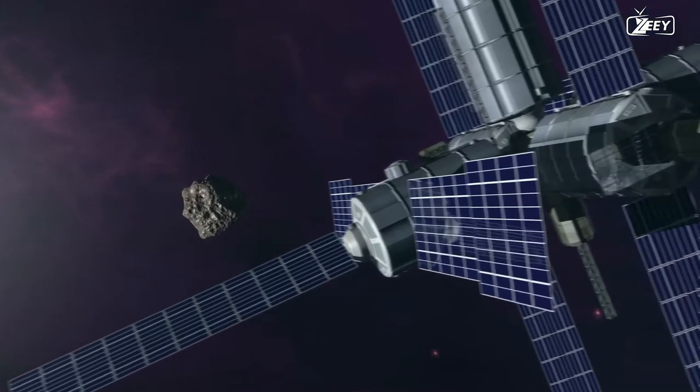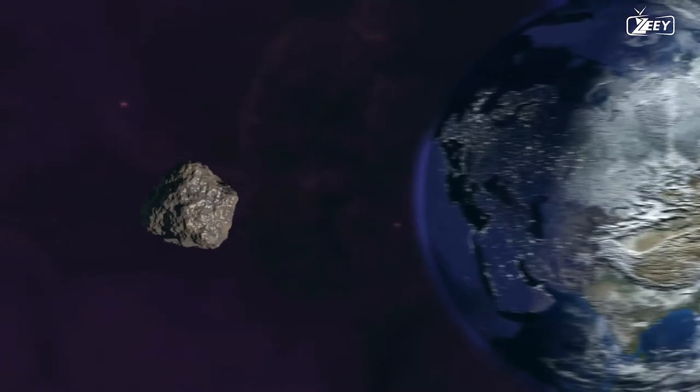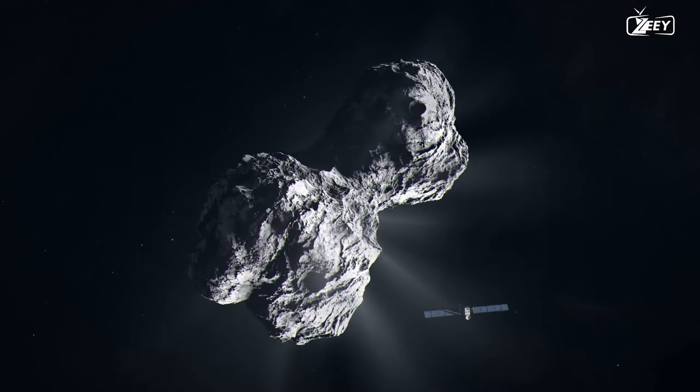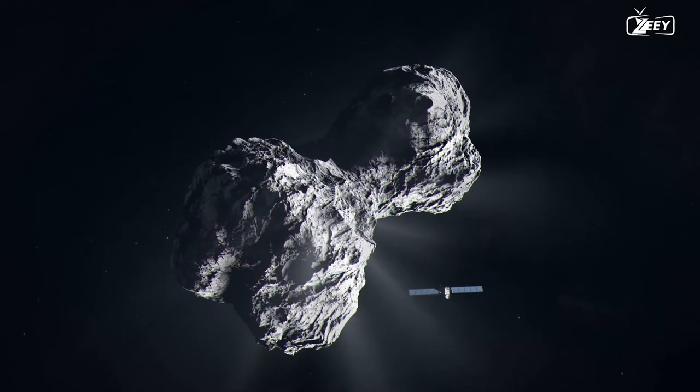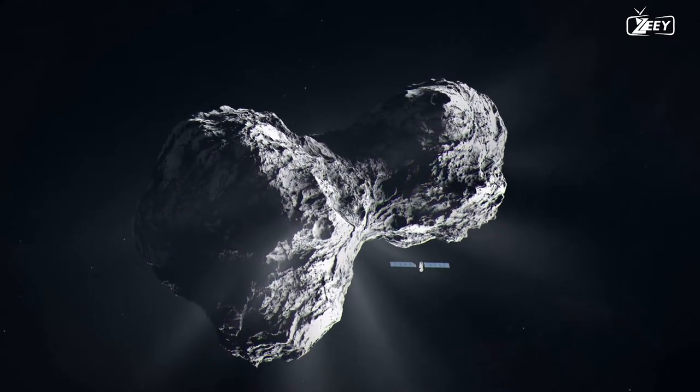Collaboration between James Webb and Hubble for the DART mission. Recently, NASA used the DART mission to conduct an experiment to deflect an asteroid. The two most potent telescopes at the time, Hubble and James Webb, were put to the test by NASA scientists and engineers.